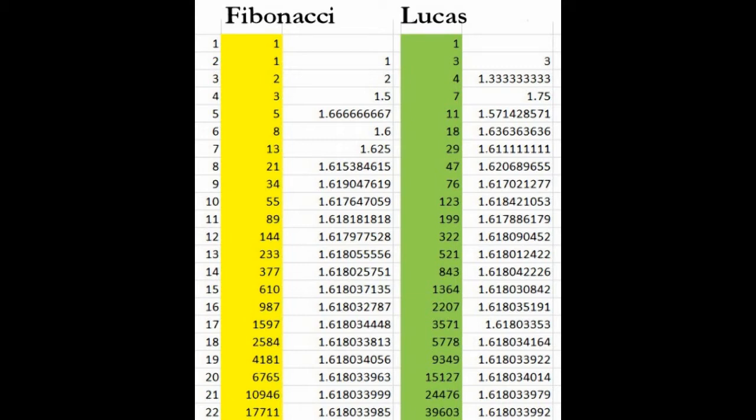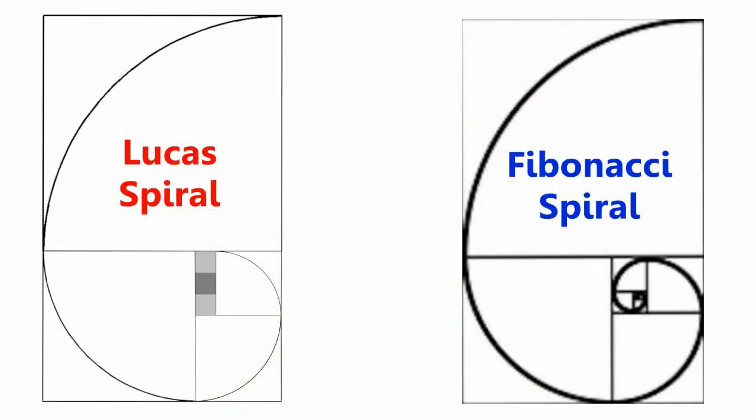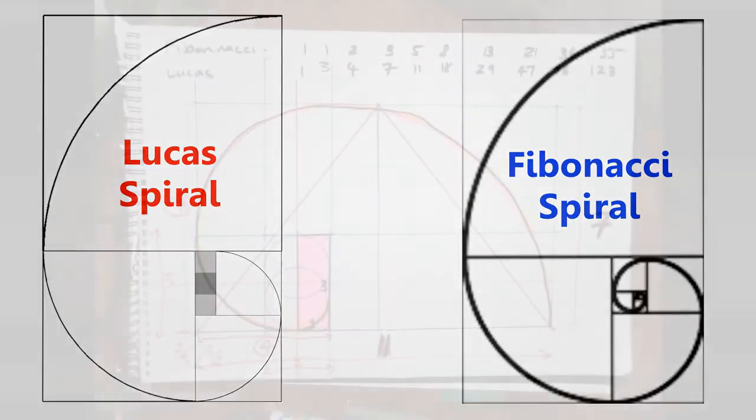On the green column we see the Lucas numbers and the ratio. They begin differently, but very soon they begin to come back to this very same lovely number 1.6180339. We're going to draw the Lucas spiral, see the similarity to the Fibonacci spiral.